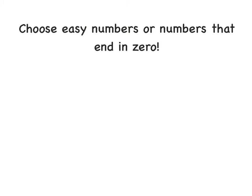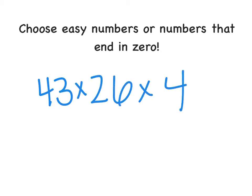Sometimes, you might have three numbers that you're multiplying together. So let's say I had 43 times 26 times 4. Here, I'm going to use a little bit of rounding and a bit of compatible numbers. I see that 26 and 4 is really close to 25 times 4, which is 100. So I'm going to change those to 25 times 4, and I'll make 43 into 40.